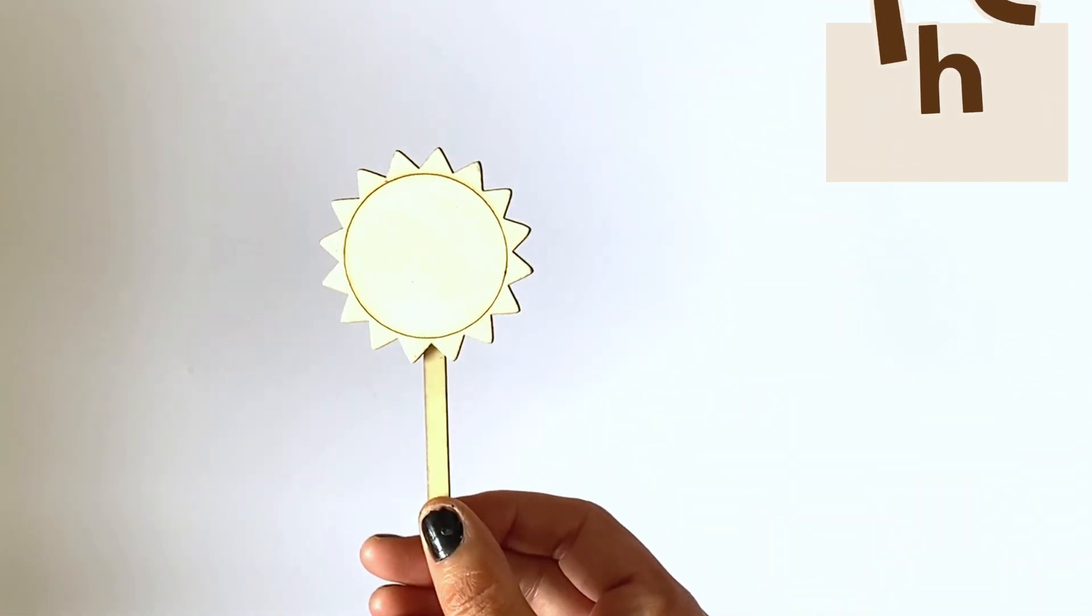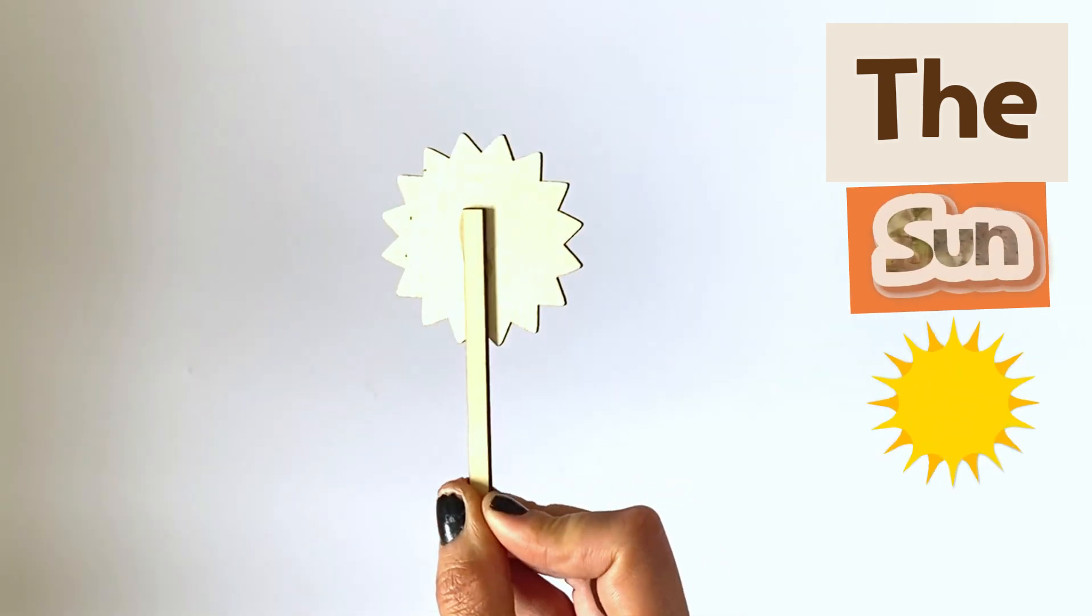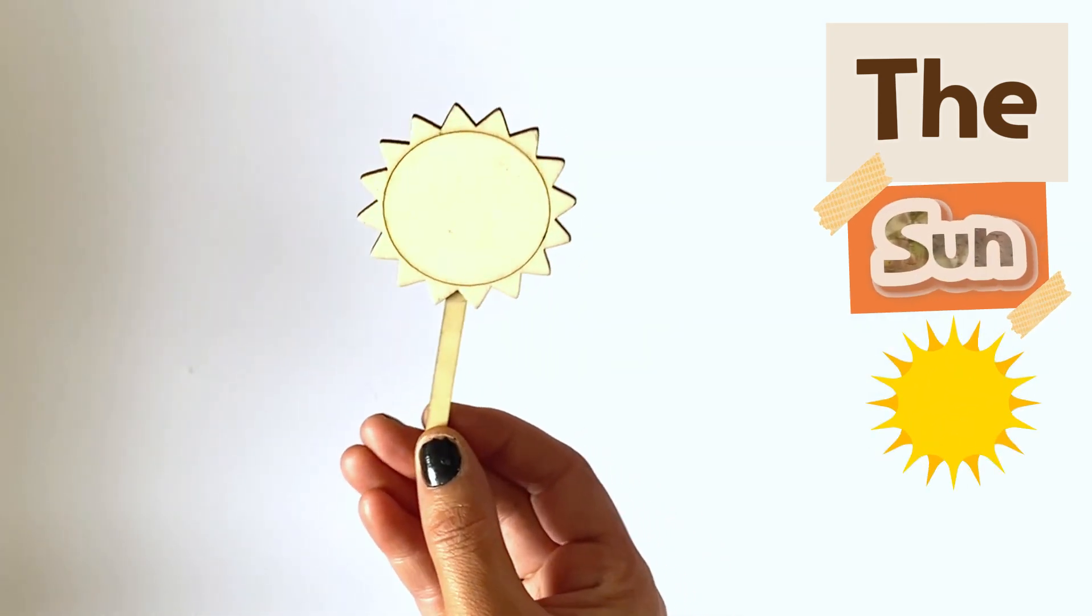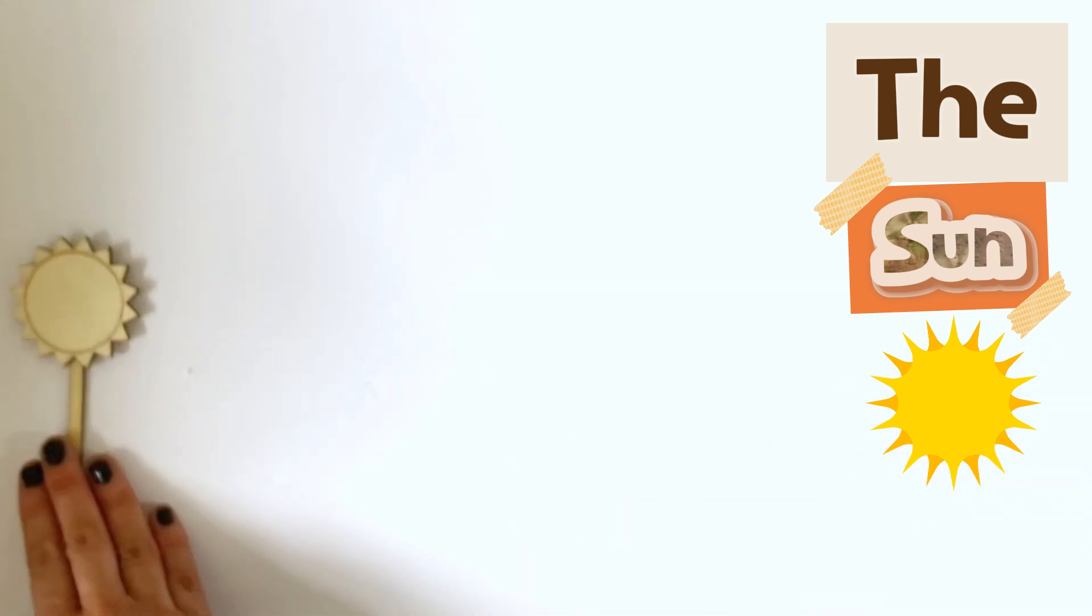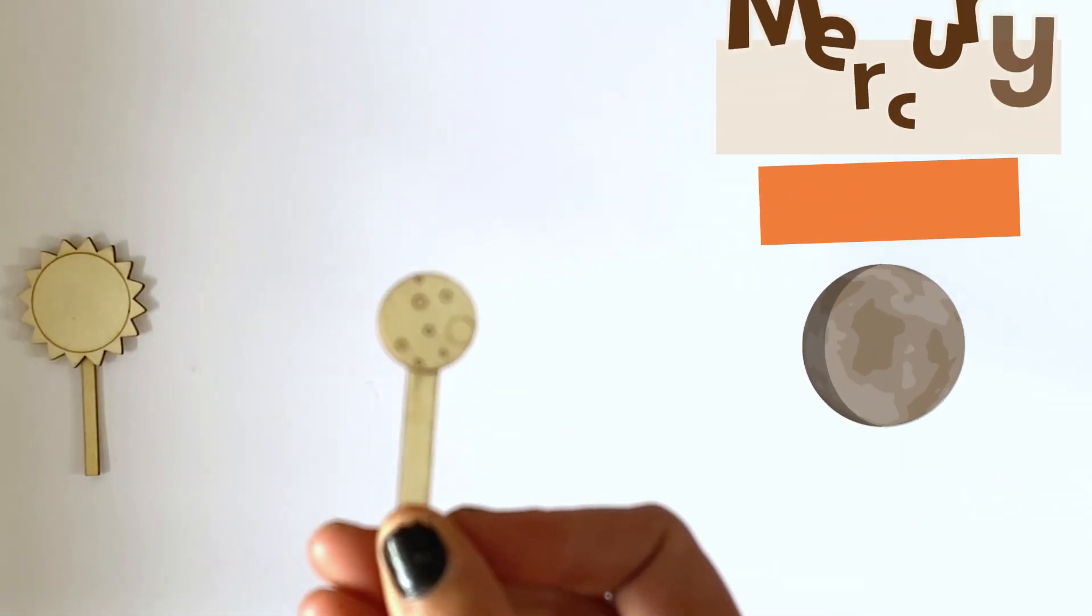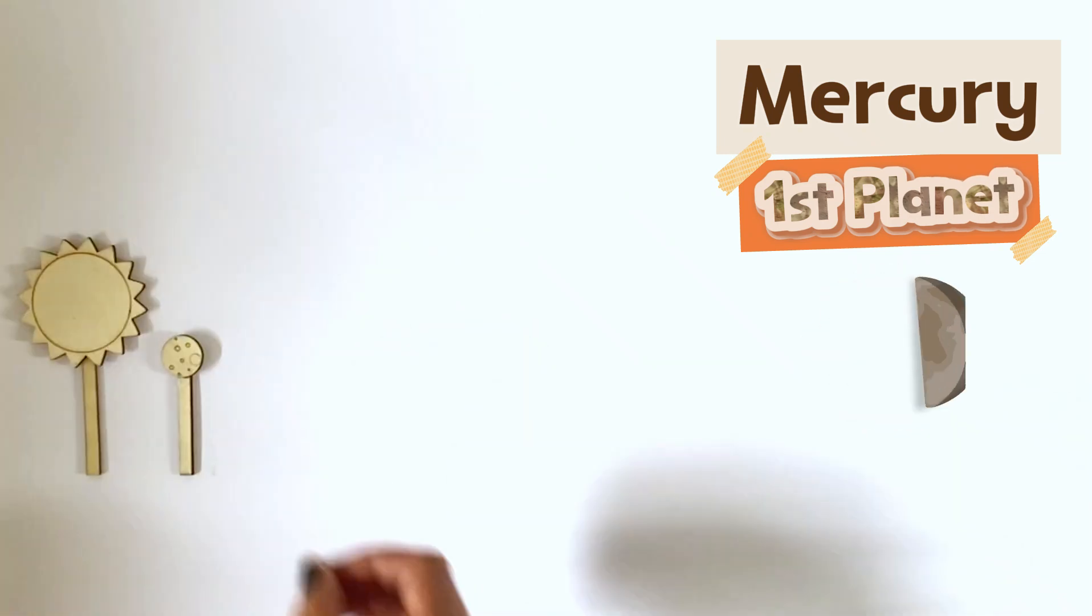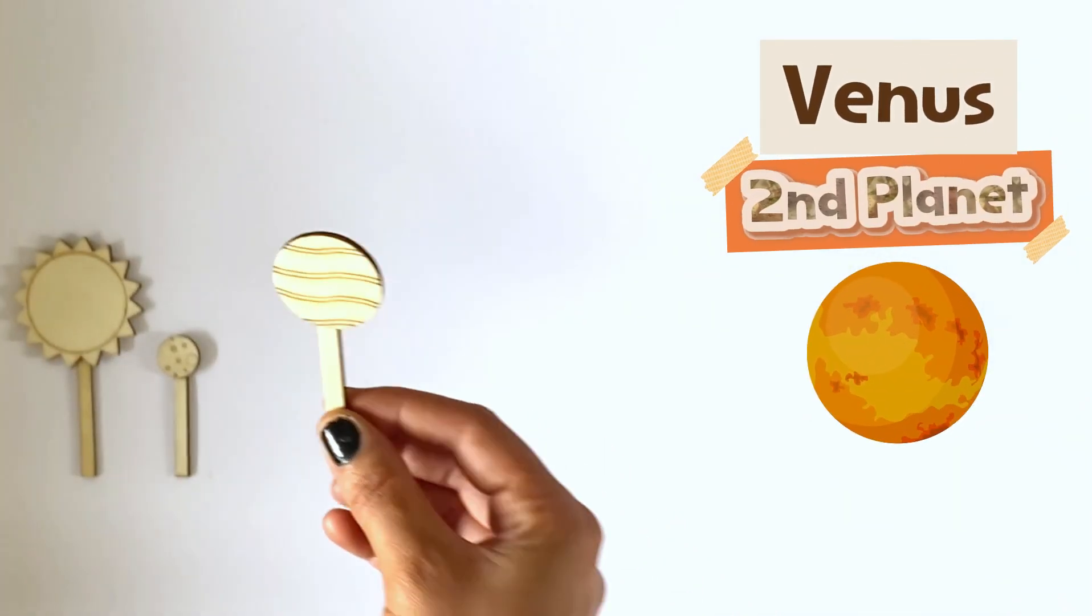So we have all the planets and the Sun from a set, however you could make them yourself and stick it to a lollipop stick. So first we have the Sun, then we have Mercury, next is Venus.